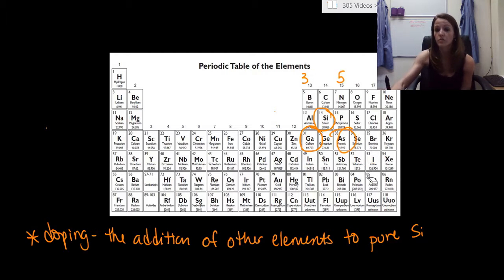So arsenic has one more than silicon, and gallium has one less than silicon. This is important. I know that feels silly and elementary and rudimentary, but this is something that's very important.